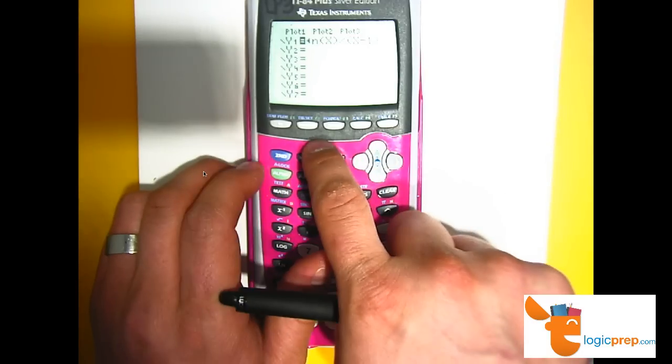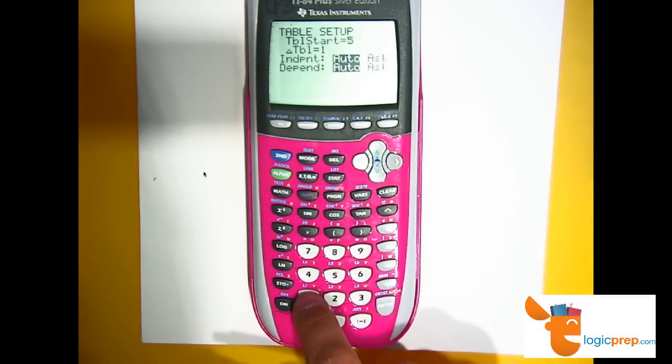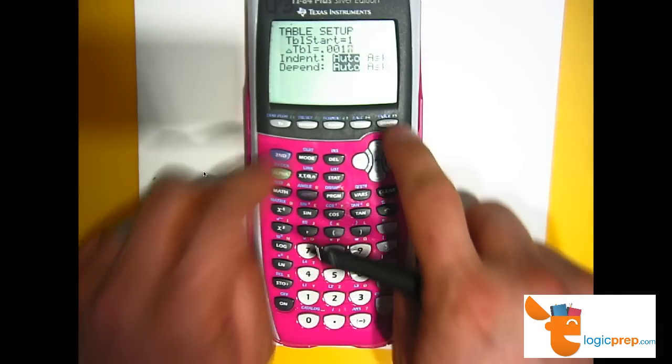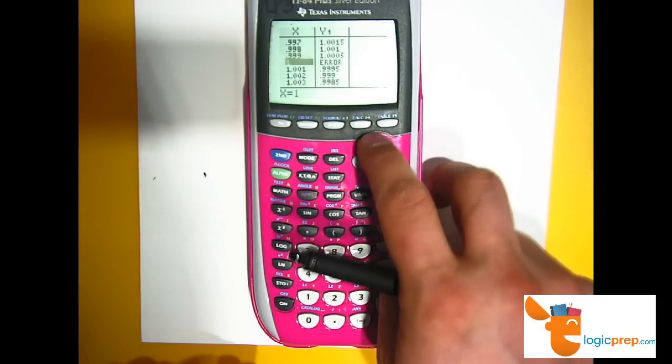On this calculator it's second table set. I want to start at 1, but when I change I want to change by a really small value, like a thousandth. Now I'm going to hit second table, and I go to my graph and I see, okay, as x is approaching 1 here, my y value is getting closer and closer to 1.